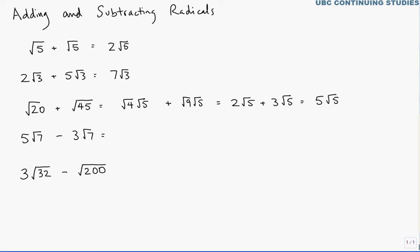Subtraction's really no different. If we have 5√7 - 3√7, the √7's, the objects if you like, are the same, so it's fine. We can combine these, we have 5 of them, we take away 3 of them, that leaves us with just 2 of them, 2√7.